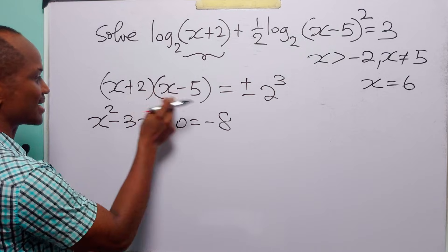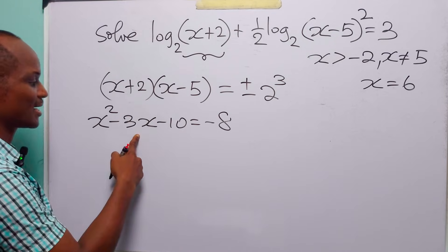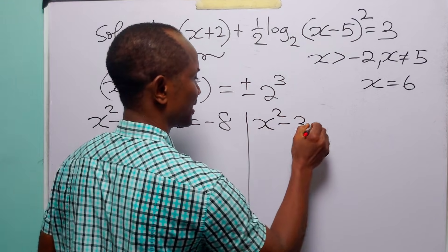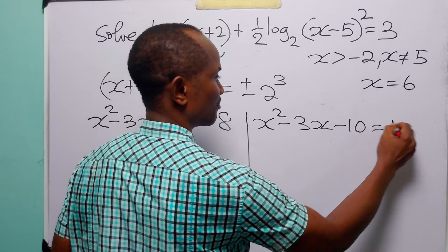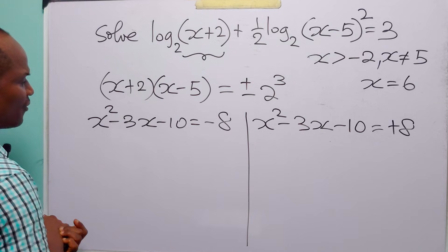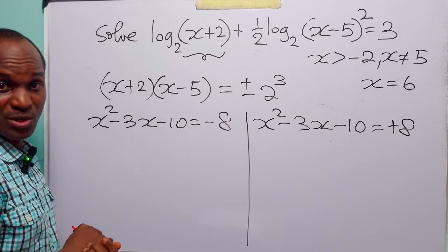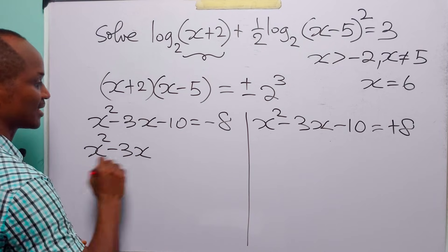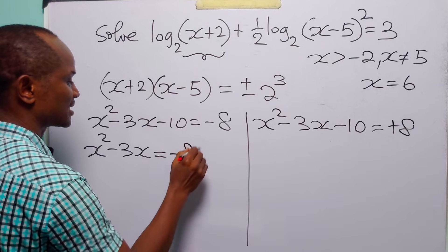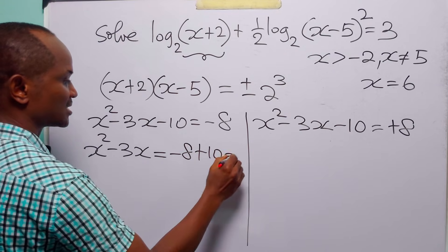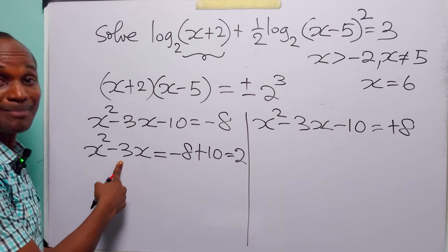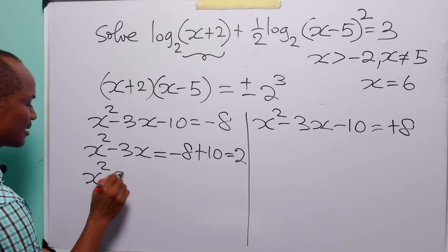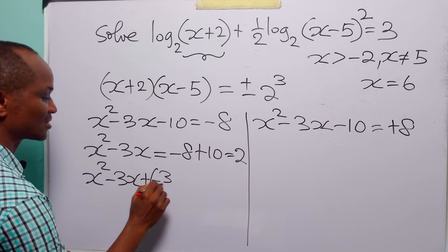You recall that expanding the two brackets gives x squared minus 3x minus 10. For the first equation, we cannot solve by factorization, so we complete the square: x squared minus 3x equals minus 8 plus 10, which equals 2. We divide minus 3 by 2, square it, and add to both sides.